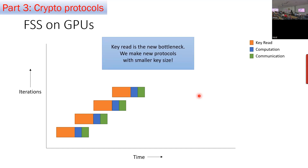We made new protocols with smaller key size, sometimes sacrificing single-round protocols for two-round ones while keeping communication roughly the same. For ReLU in Orca, we split computation into two parts: first output a bit indicating whether x is less than 2 to the n minus 1 — key size n times lambda plus 1, eliminating the quadratic term — then use a select protocol to go from that bit to a ring element output in one additional round. Key size went from n lambda plus 2n-squared to n lambda plus 5n, roughly 2x savings.